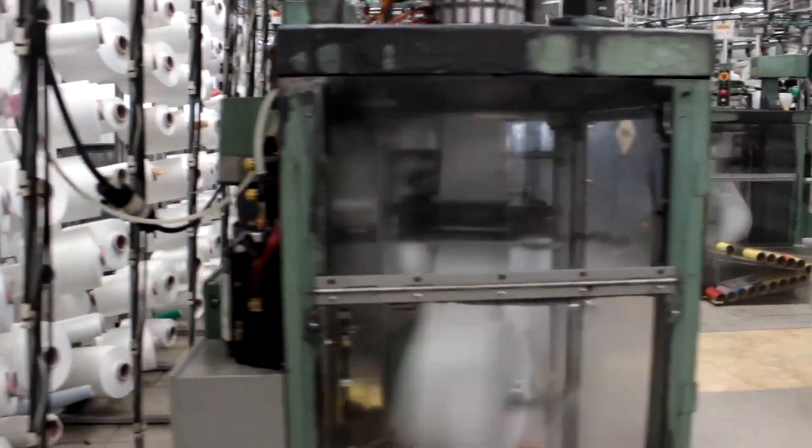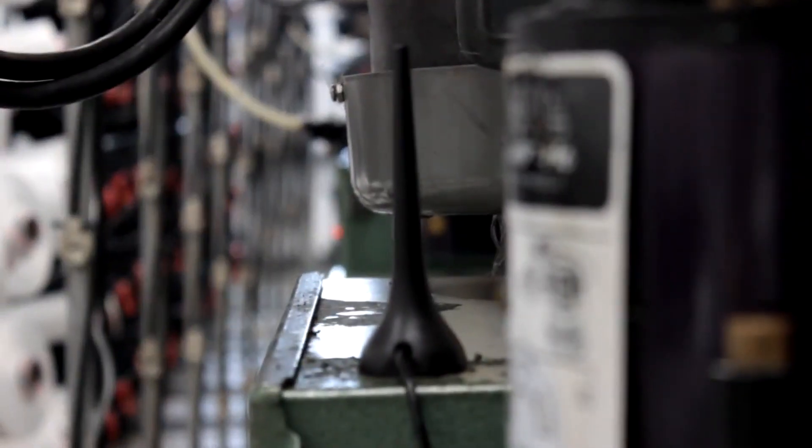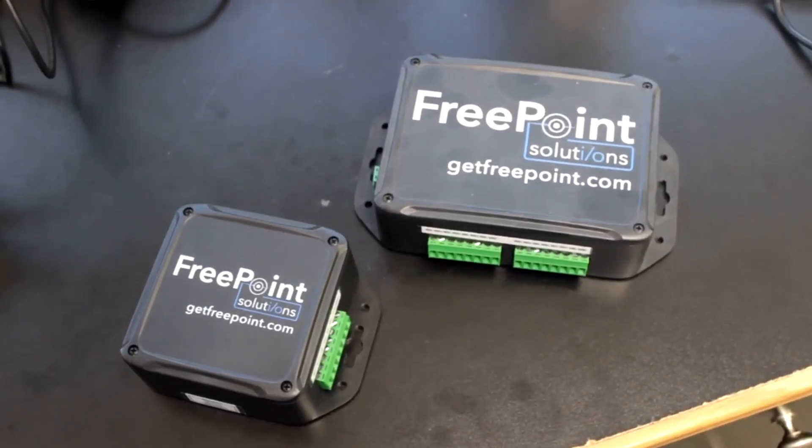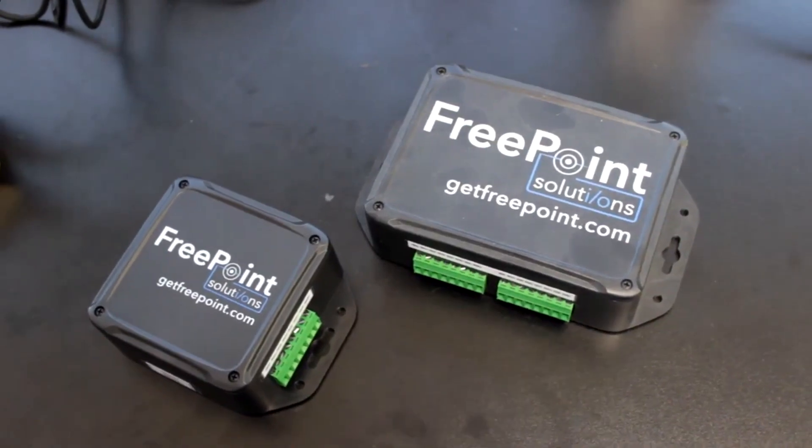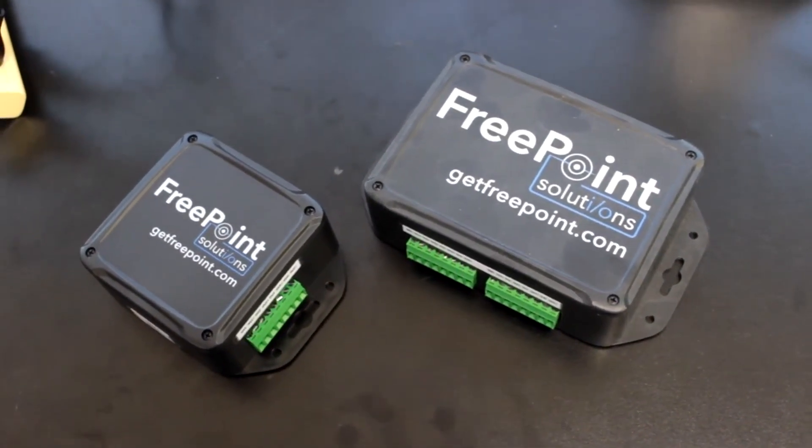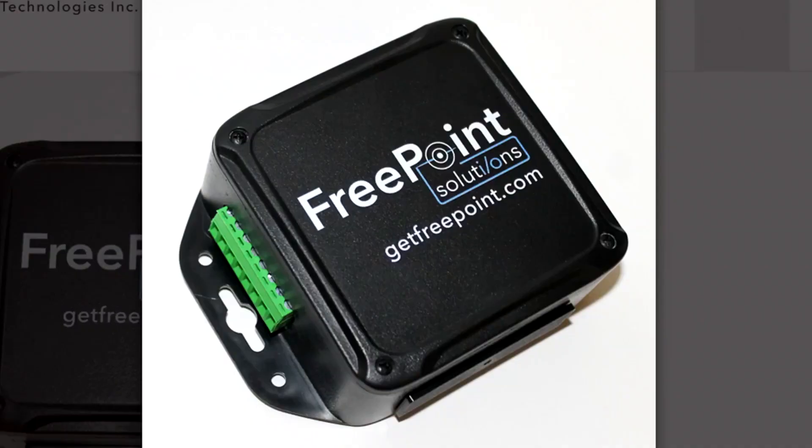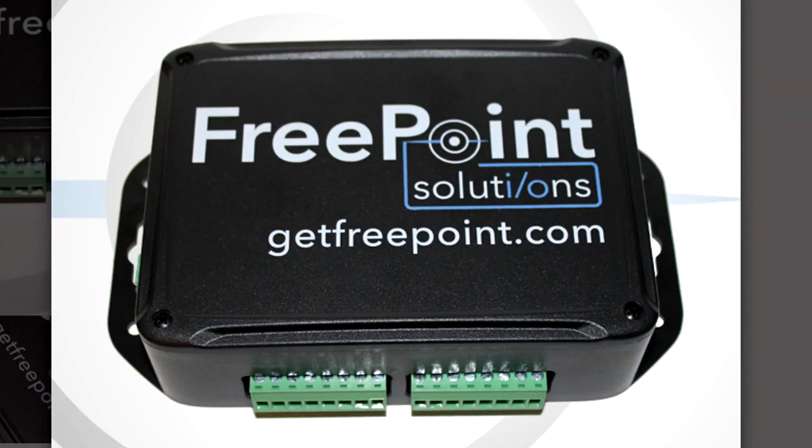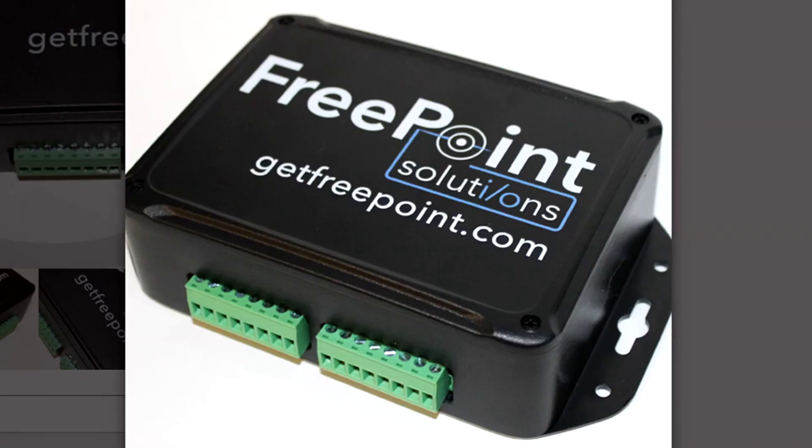Each machine is connected over an industrial wireless connection through our black box. The black boxes come in four different sizes determined by the number of inputs. The 4i has four inputs, the 8i has eight inputs, the 12i has 12, and the 16i has 16.